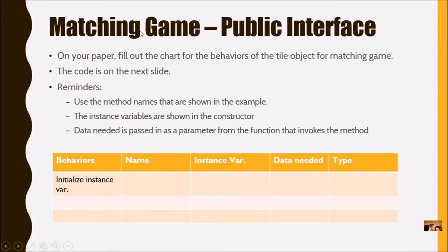Let's start with the matching game that you just saw, and let's go ahead and create a public interface for this. On your paper, as a group, you're going to fill out the chart for the behaviors of the tile object for the matching game. The code's going to be on the next slide, so you'll be able to see it. And for your reminders, remember to go ahead and use the method names that are shown in the example, so they've already been coded for you. The instance variables are shown in the constructor, and data needed is passed in as a parameter.